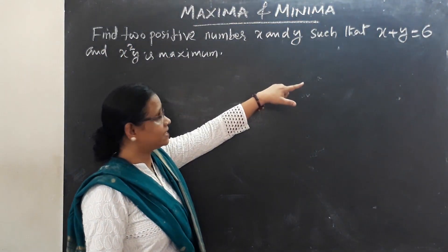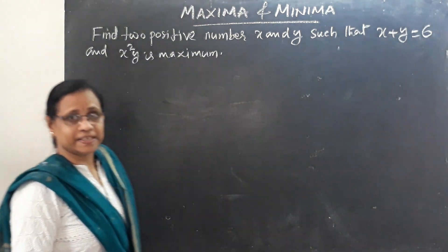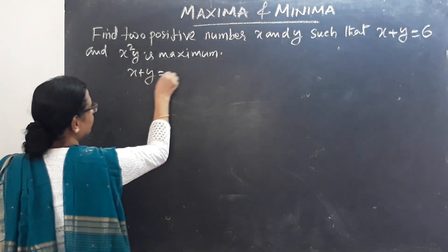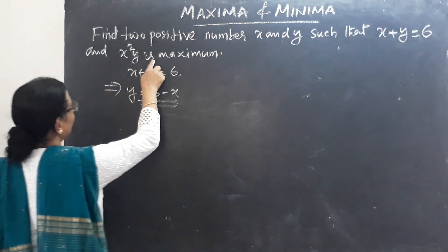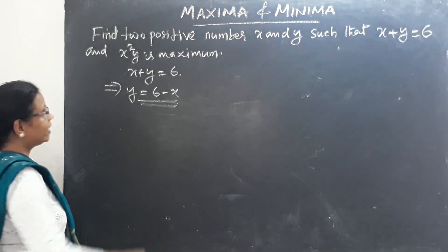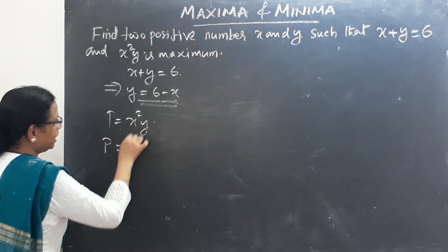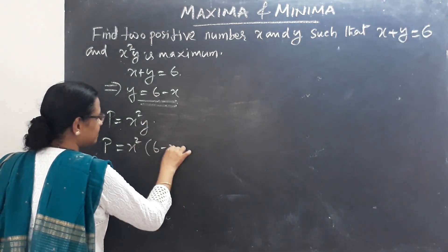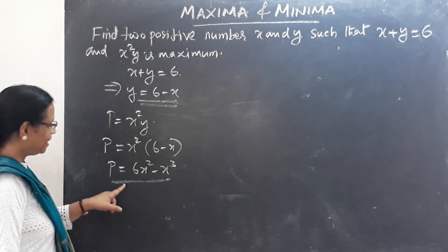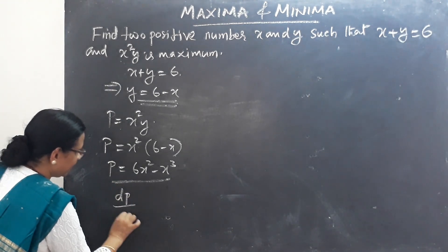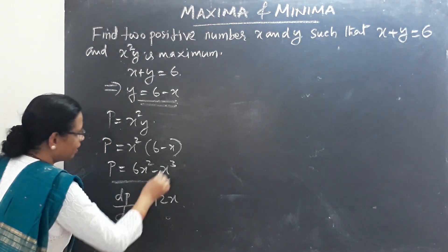Find two positive numbers x and y such that x plus y equals 6 and x²y is maximum. From x plus y equals 6, we get y equals 6 minus x. So x²y becomes x²(6 minus x), which equals 6x² minus x³. This is our main equation, and now we find the first derivative.